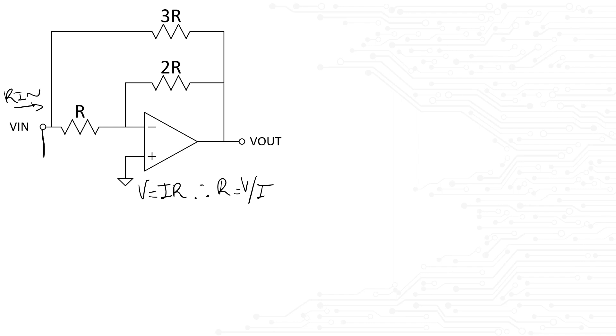We can stick a test voltage at the input, measure the current leaving the test source and know what the impedance seen by the source is. Let's label this node Vx. We know that if this is an ideal op-amp that Vx is equal to 0.